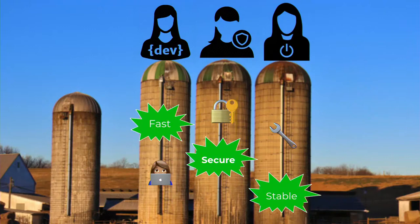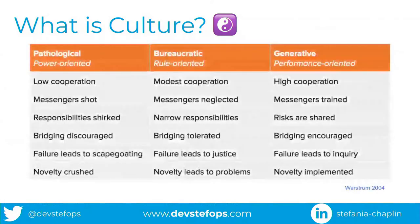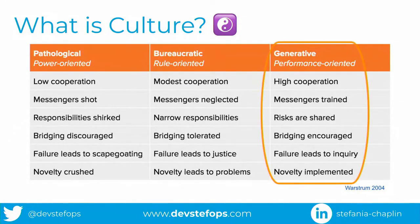Unless you automate things, the answer to having all three is no. Westrum did a great analogy about three different types of culture, and I want to focus on generative. Because if something goes wrong — does it lead to scapegoating, does it lead to justice, or does it lead to inquiry? We should see failure as an opportunity to improve the system. And in order to do that, you need psychological safety — developers, security, operations, and the entire IT team need to be able to communicate and create a performance-oriented environment.